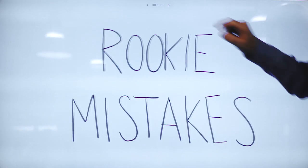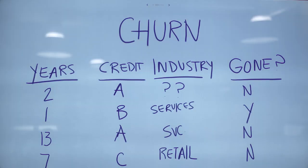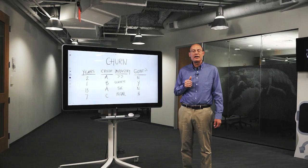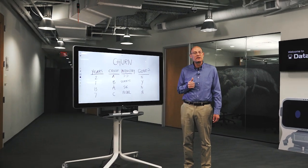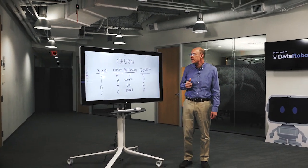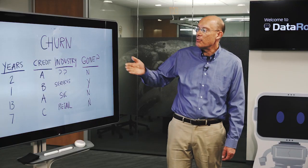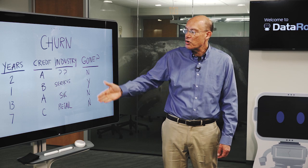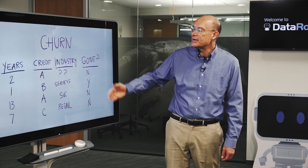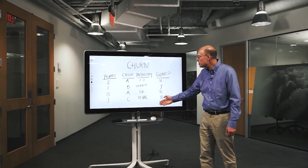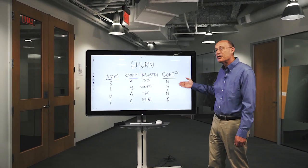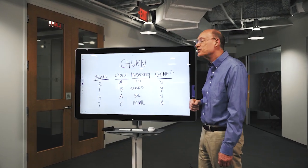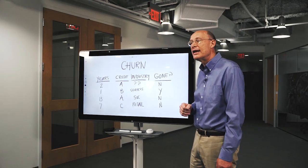The first mistake: not understanding your data. Here's some churn data — when customers are leaving an organization. You can see we have how many years a customer has been with us, what their credit rating is, their industry, and then whether they left in the last year. There are some issues with this data.